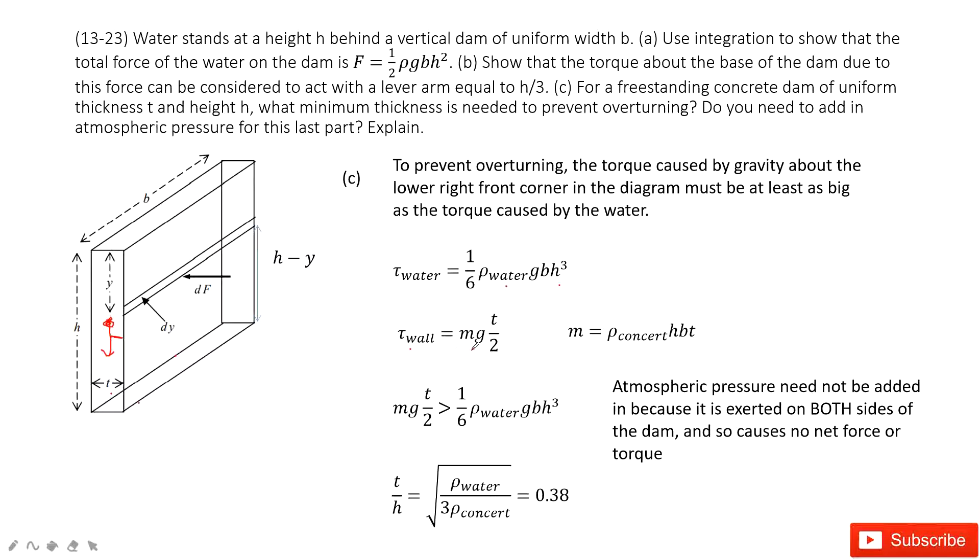And then can you find the mass for the concrete? Yes, use the density times the volume, h b t. Now we input m inside, we solve this equation, we can get the final answer. Look at this one. So we find there is a ratio that t must be as large as 0.38 h.